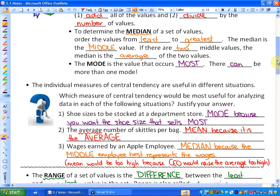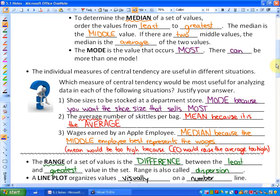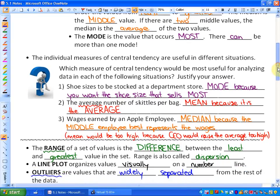Let's look at three really quick examples just to kind of explain or help define them a little bit more. The individual measures of central tendency are useful in different situations. Which measure of central tendency—so it's asking mean, median, or mode—would be the most useful for analyzing data in each of the following situations and justify your answer.